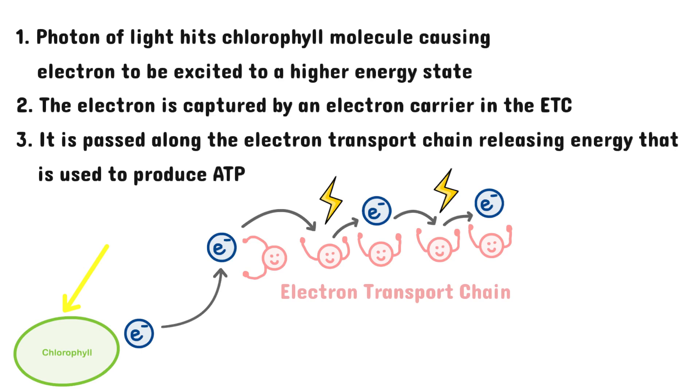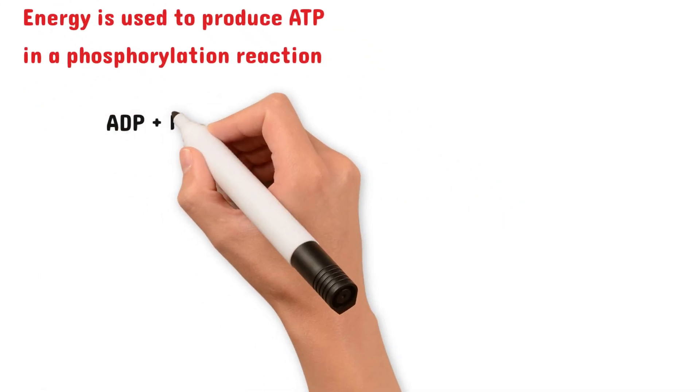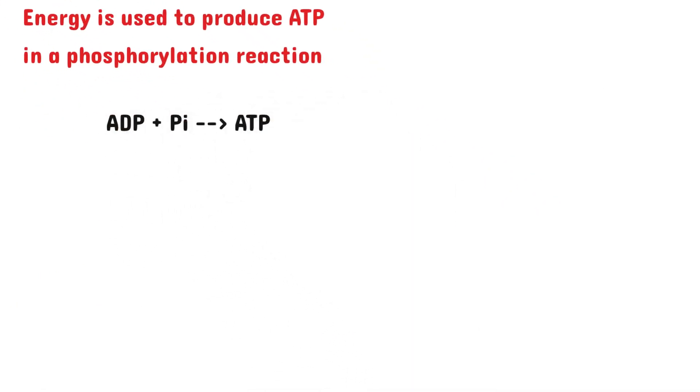When we talked about the electron transport chain and the importance of ATP, we mentioned that it is found in the mitochondria. But in plants, it can also be found in the lamellae of the chloroplast, which is where this stage takes place. Now the energy that is released is used to produce ATP in a phosphorylation reaction. So adenosine diphosphate combines with a free phosphate group to make ATP.